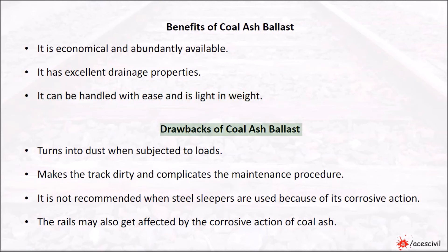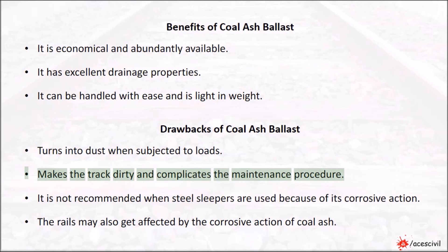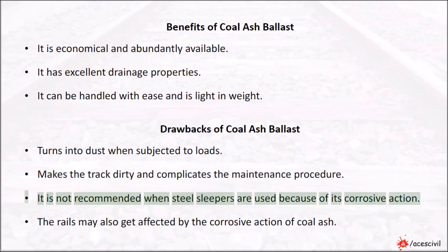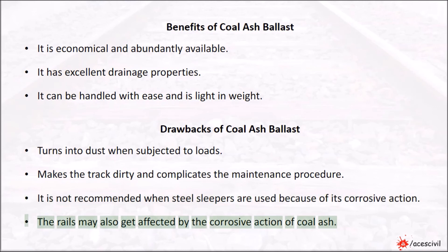Drawbacks of coal ash ballast: It turns into dust when subjected to loads and makes the track dirty, complicating the maintenance procedure. It is not recommended when steel sleepers are used because of its corrosive action. The rails may also get affected by the corrosive action of coal ash.